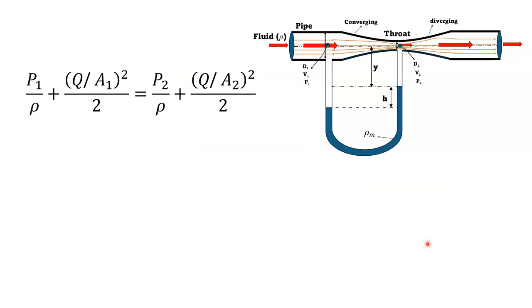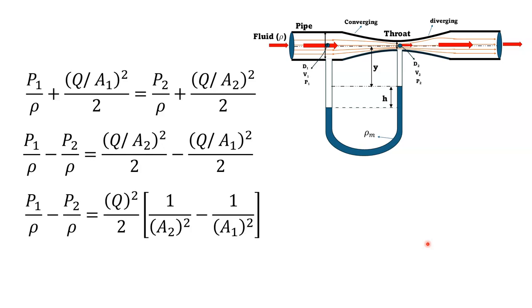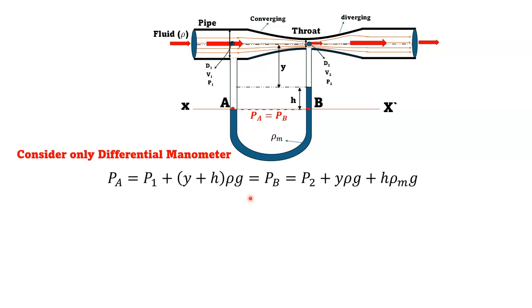Rearranging: P1/ρ − P2/ρ = (Q/A2)²/2 − (Q/A1)²/2. Taking Q²/2 common, this becomes Q²/2 · (1/A2² − 1/A1²).